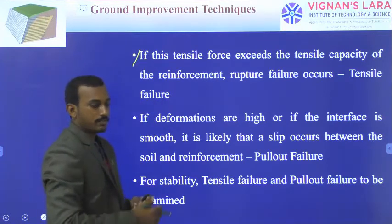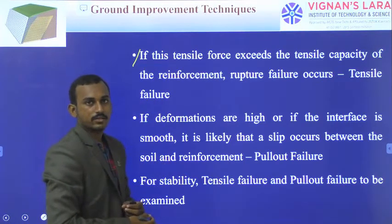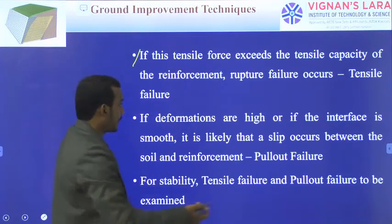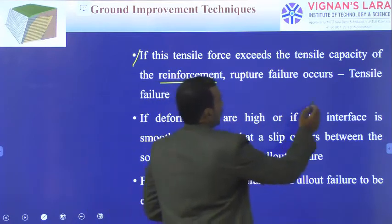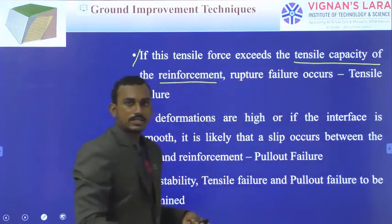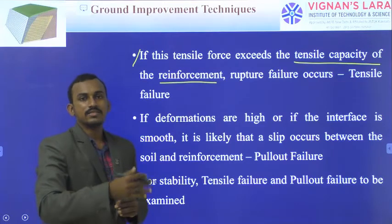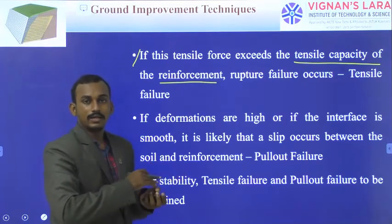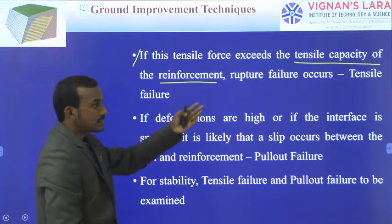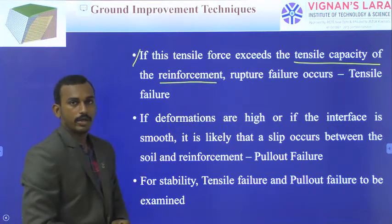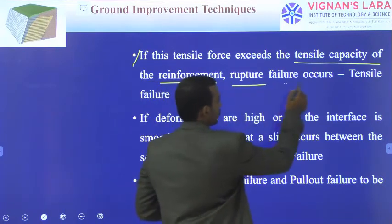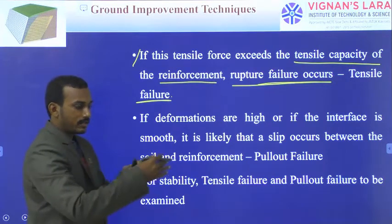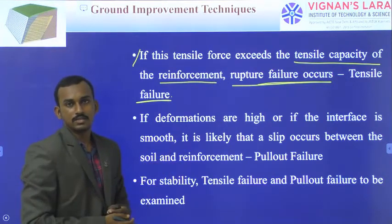If the tensile force in the horizontal direction exceeds the tensile capacity of the reinforcement — for example, if it is steel, it has a certain tensile capacity — rupture failure occurs. That means the reinforcing element may break into two pieces.